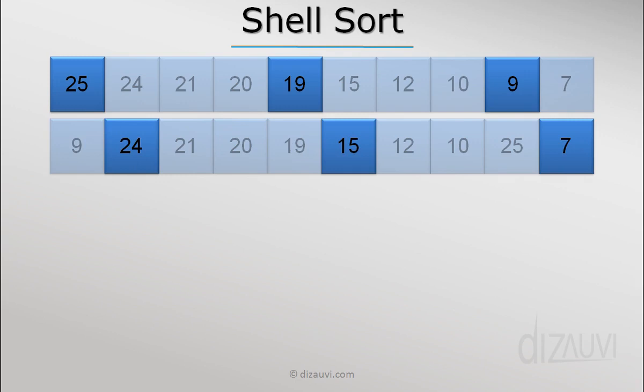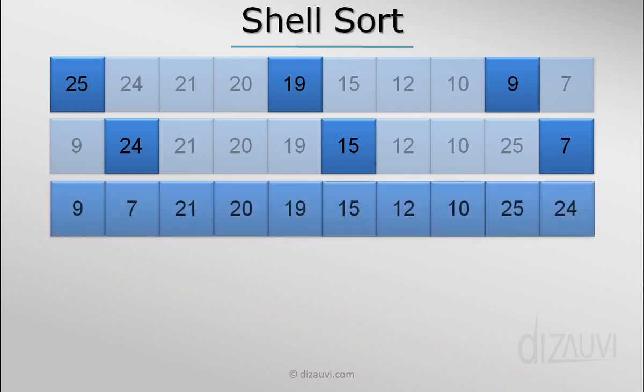Now we can choose elements at index 1, 5, and 9 and pretend that other elements of the array do not exist, and just sort these three elements. After sorting, the array would look like this.